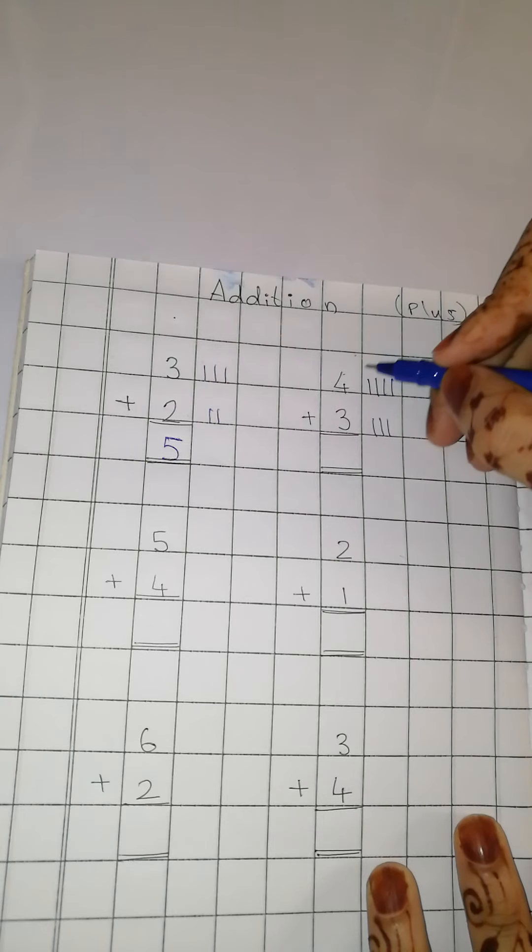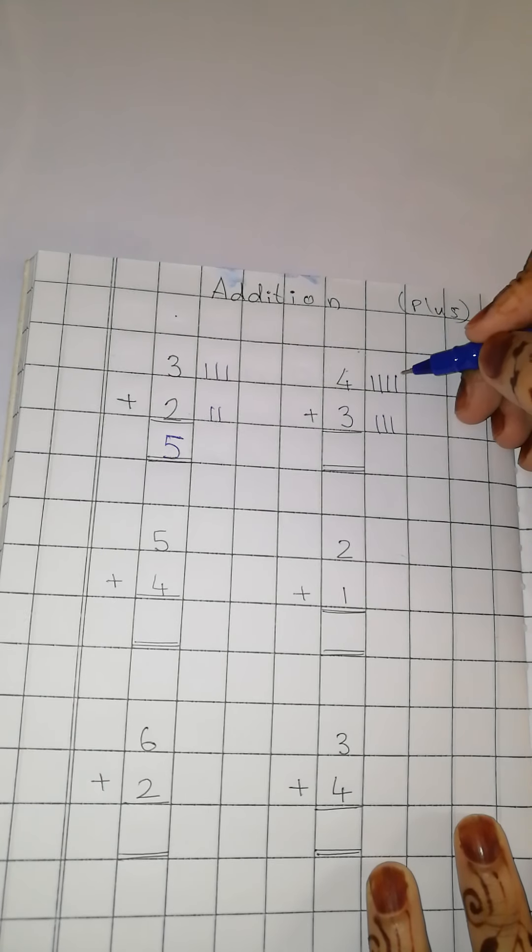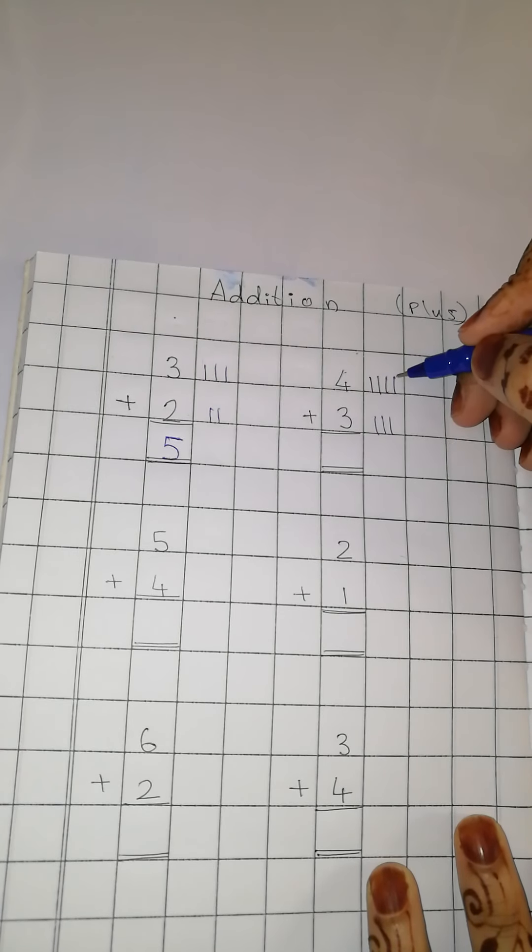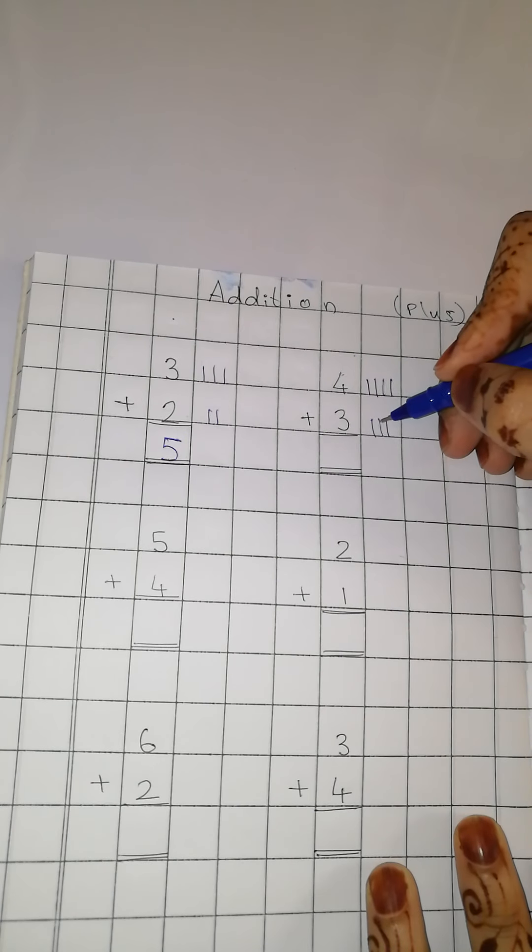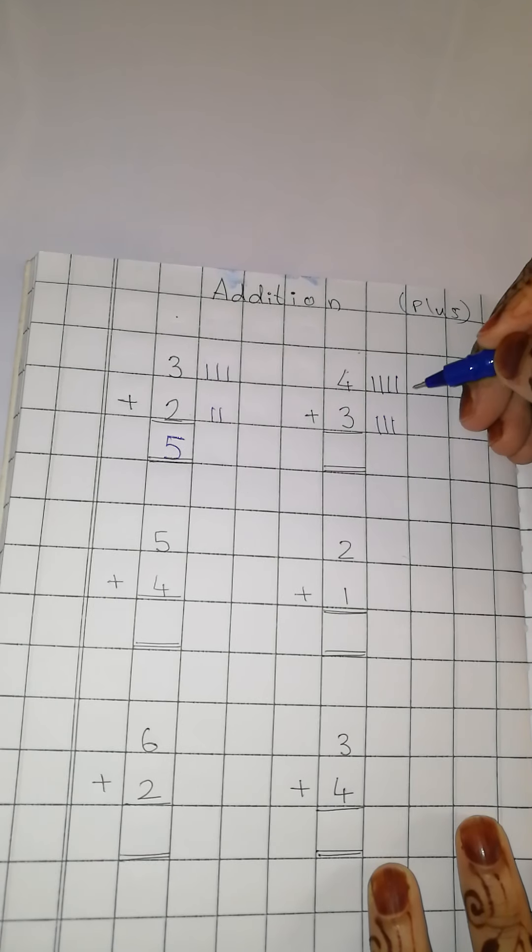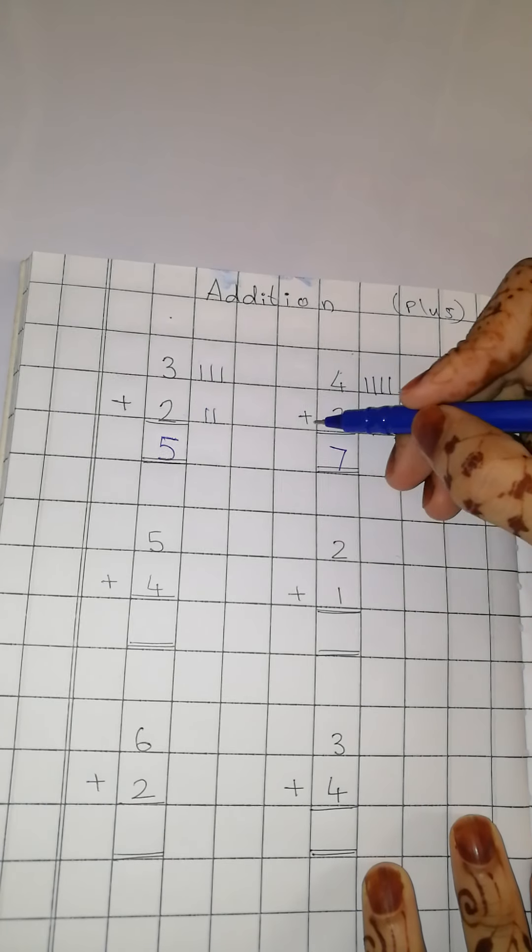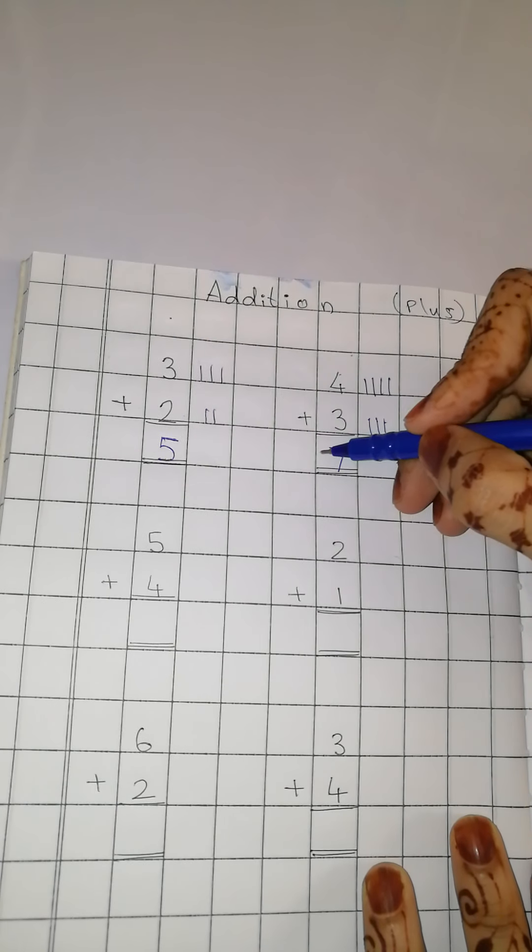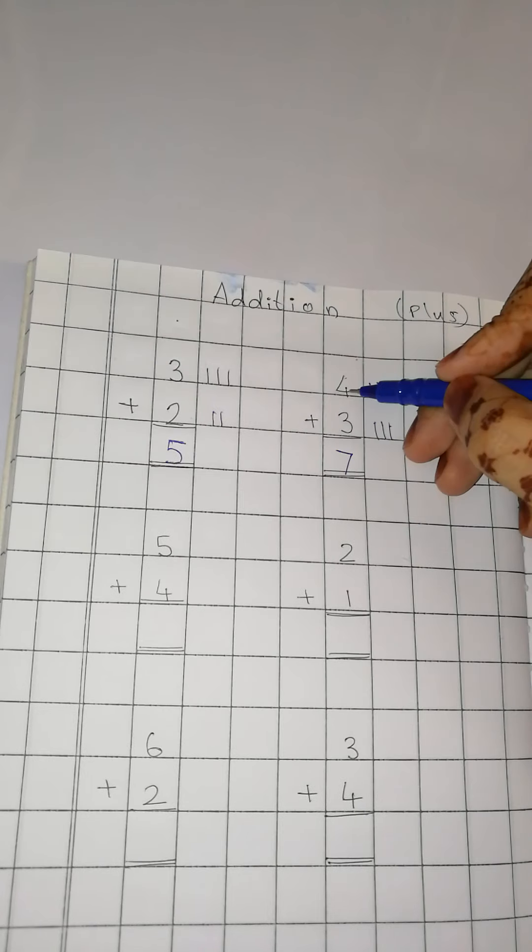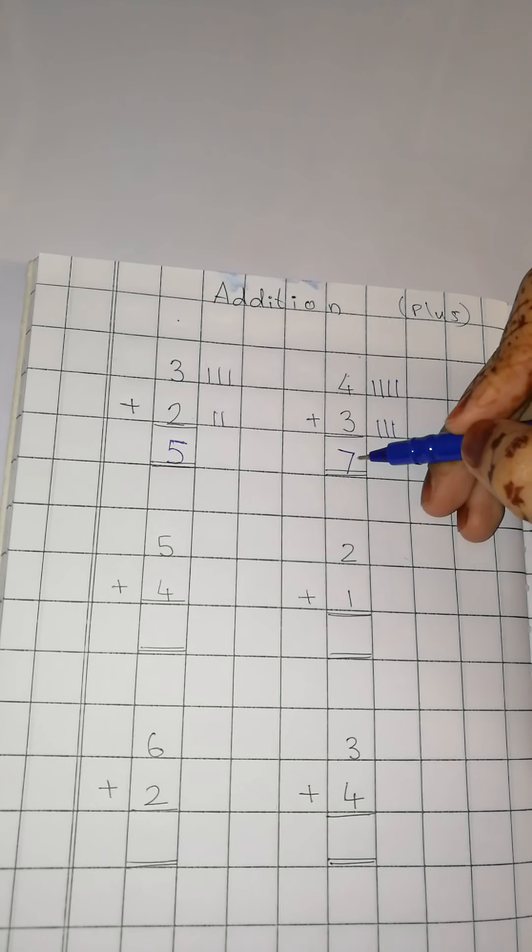Now let us see. Total kitne hotte hai all together? Upar ka number hai 4. What comes after 4? 5, 6, 7. Number is 7. So 4 plus 3 equals to 7.